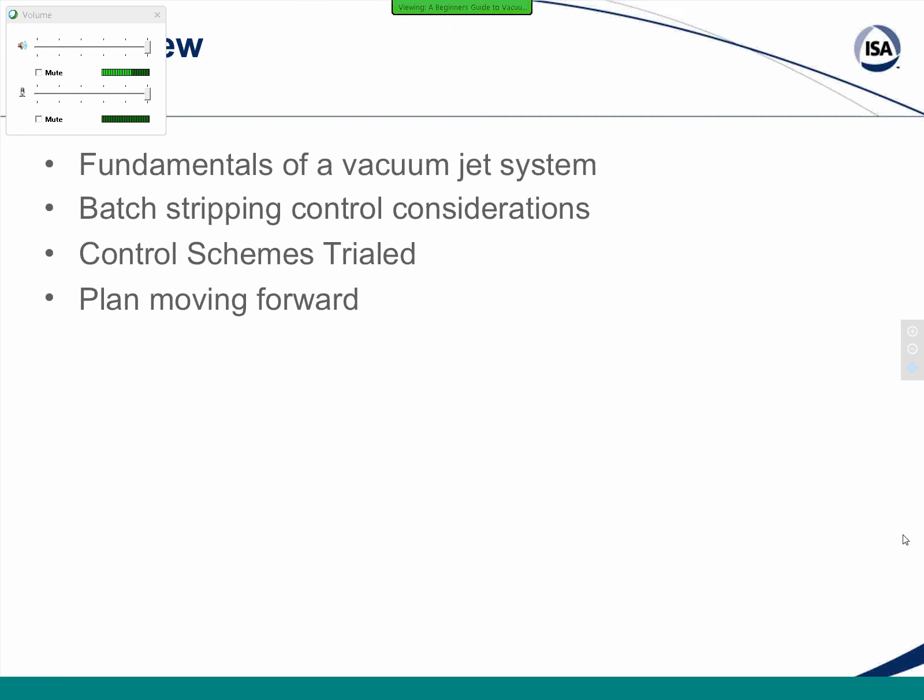First, we'll review in detail how vacuum jet ejectors work, since that's what my work is focused on, and some common issues that you should try to investigate first if your vacuum control is poor. Then we'll switch focus onto a specific batch setup that I have here at my plant and what knobs that gives me available for control. Then we'll look at the history of the control schemes that we've tried here at the site, focusing on what works and what hasn't worked, followed by a brief overview of my plans to further our performance.